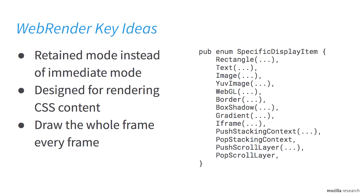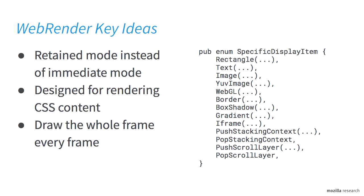So we started the WebRender project. The main things about it are: we use retain mode instead of immediate mode. Immediate mode is like — set pen color to black, draw a box, set pen color to red, draw a different box, set pen color back to black and draw another box. This is hard to optimize because you really want to minimize state changes. In retain mode, you know everything you're going to draw before you start, so you can find the optimal ordering of draw commands to minimize state changes. It turns out web pages are sort of their own scene graphs — you already have all the information you need, and we're just not using it now.